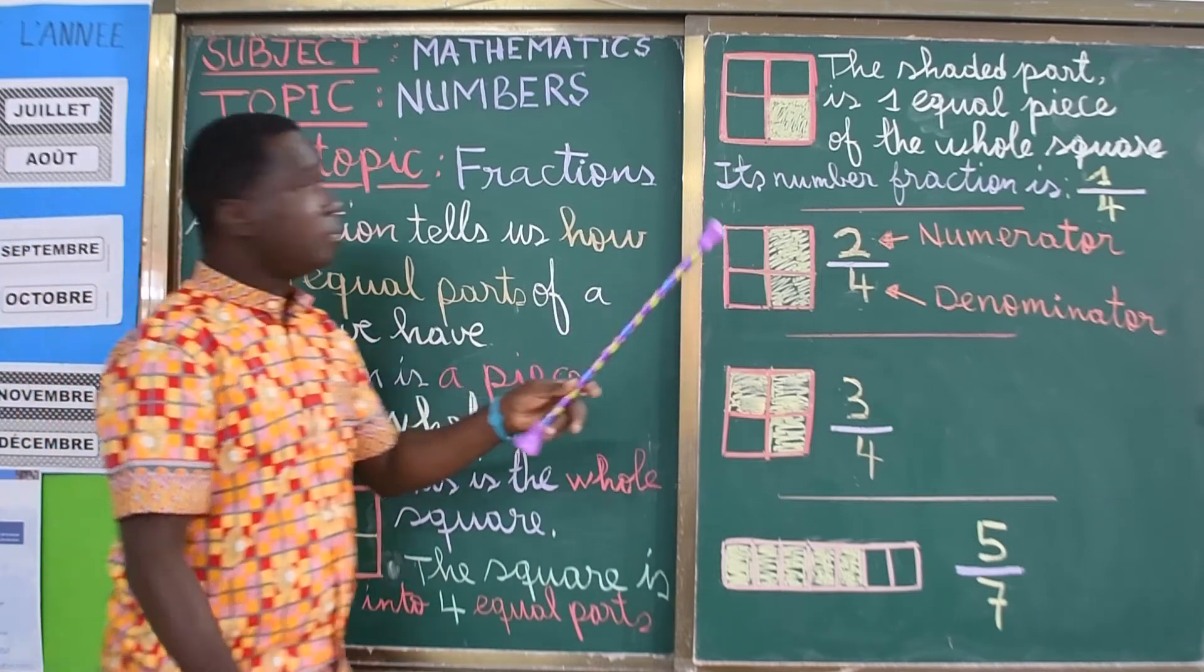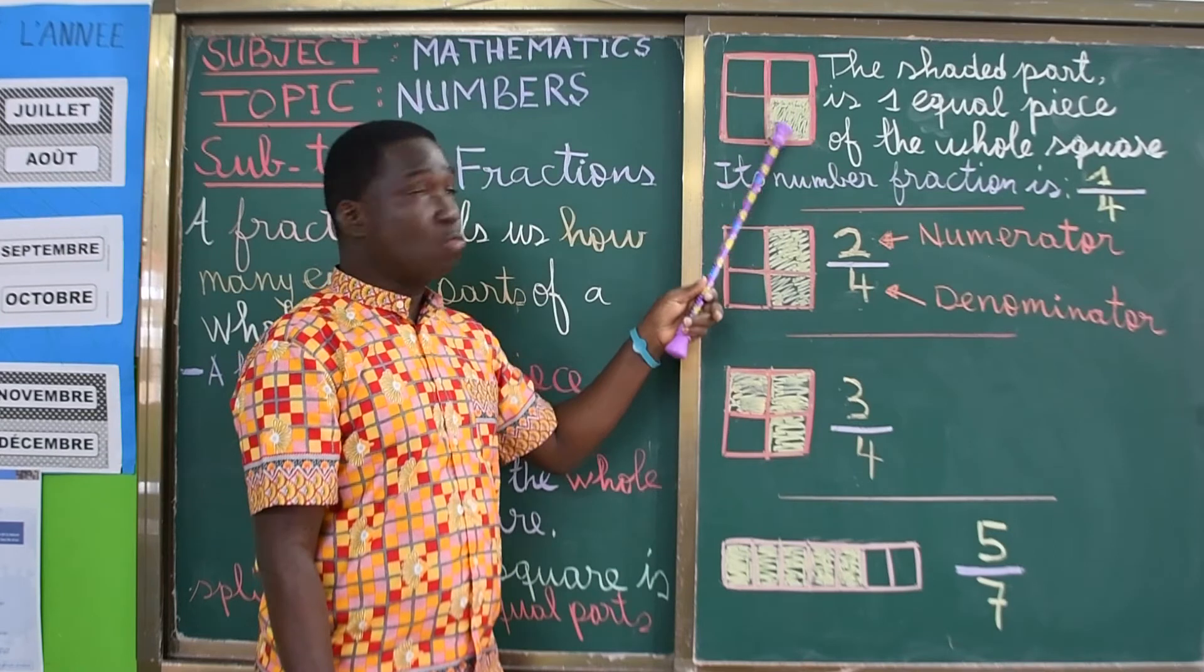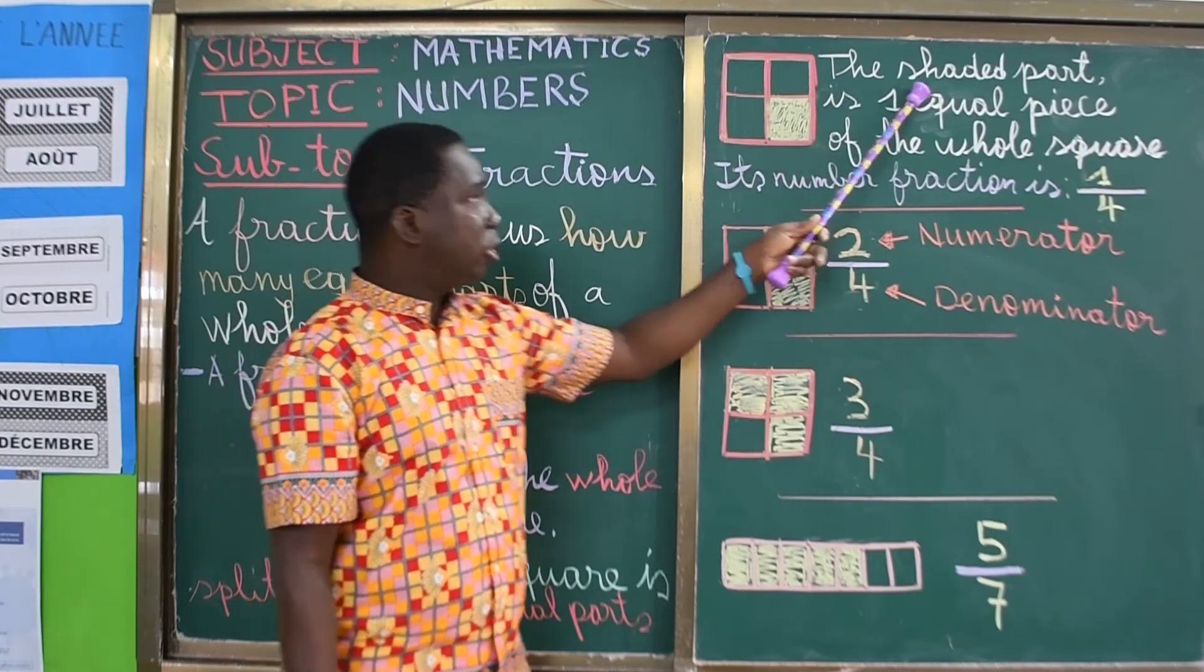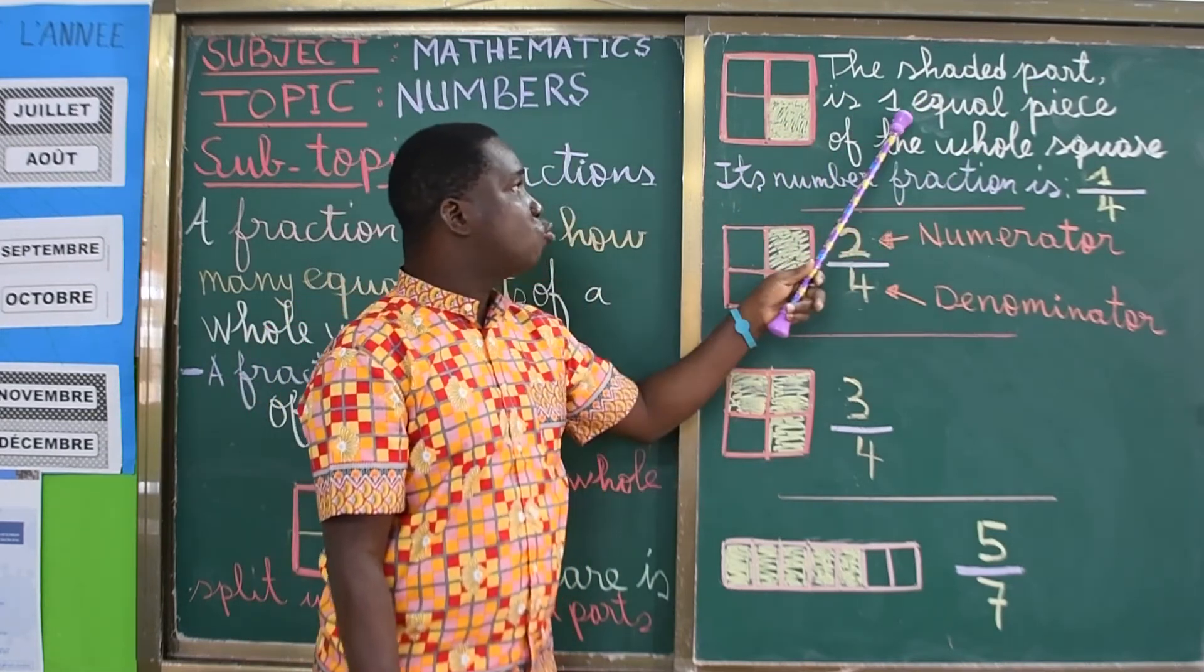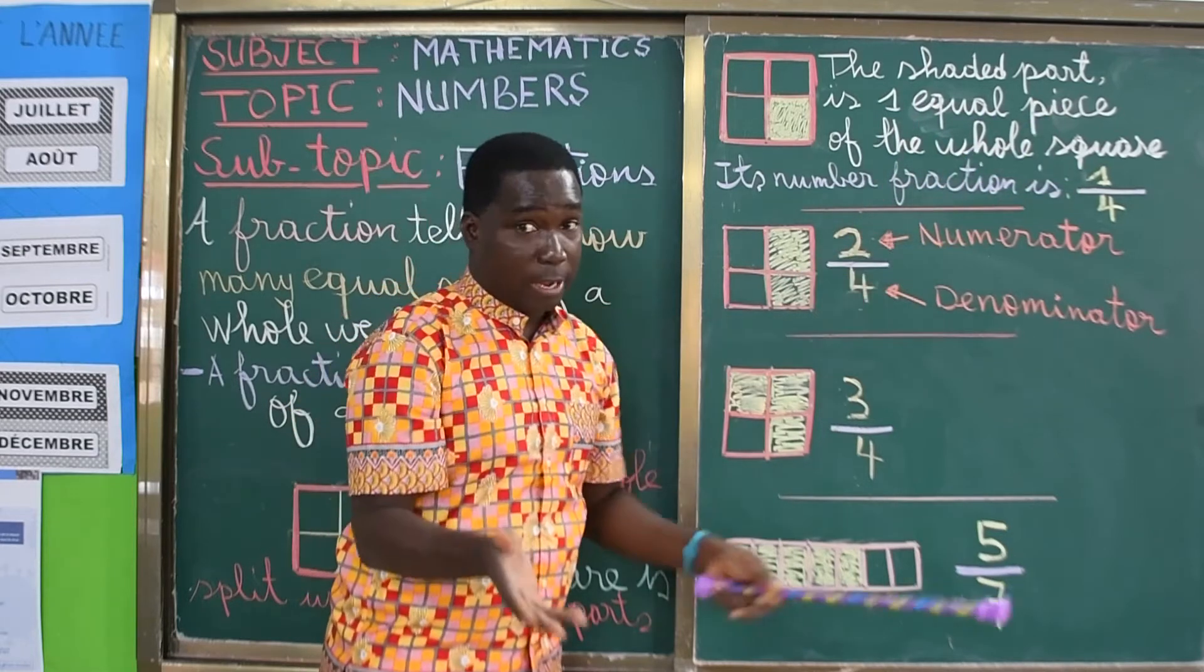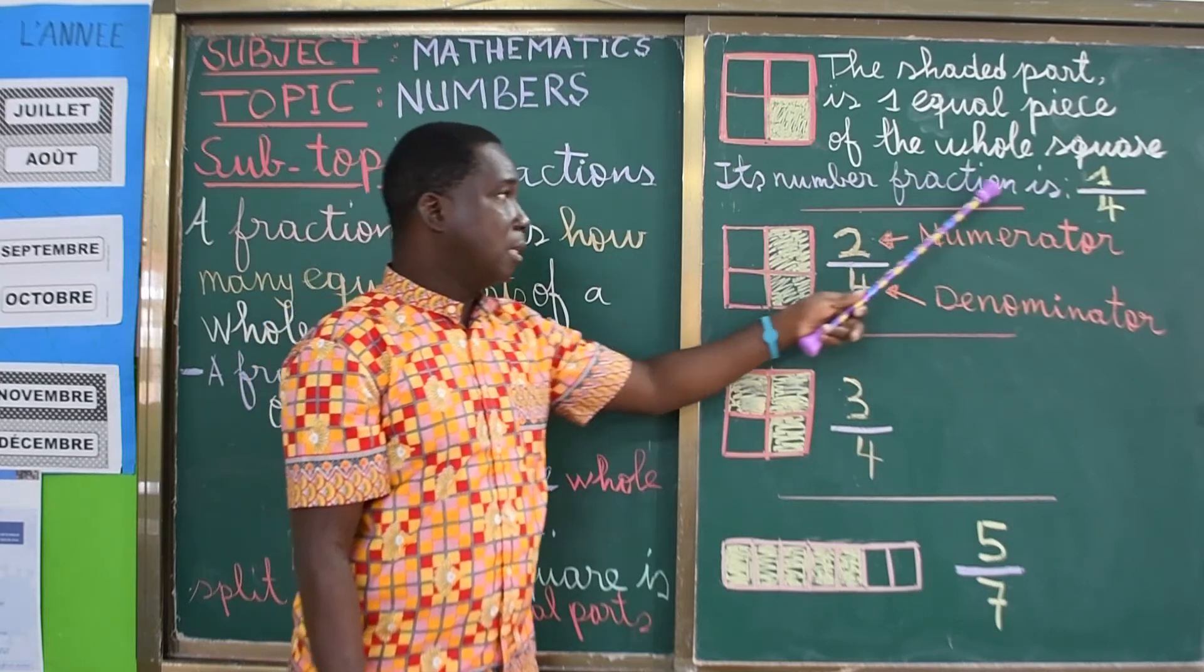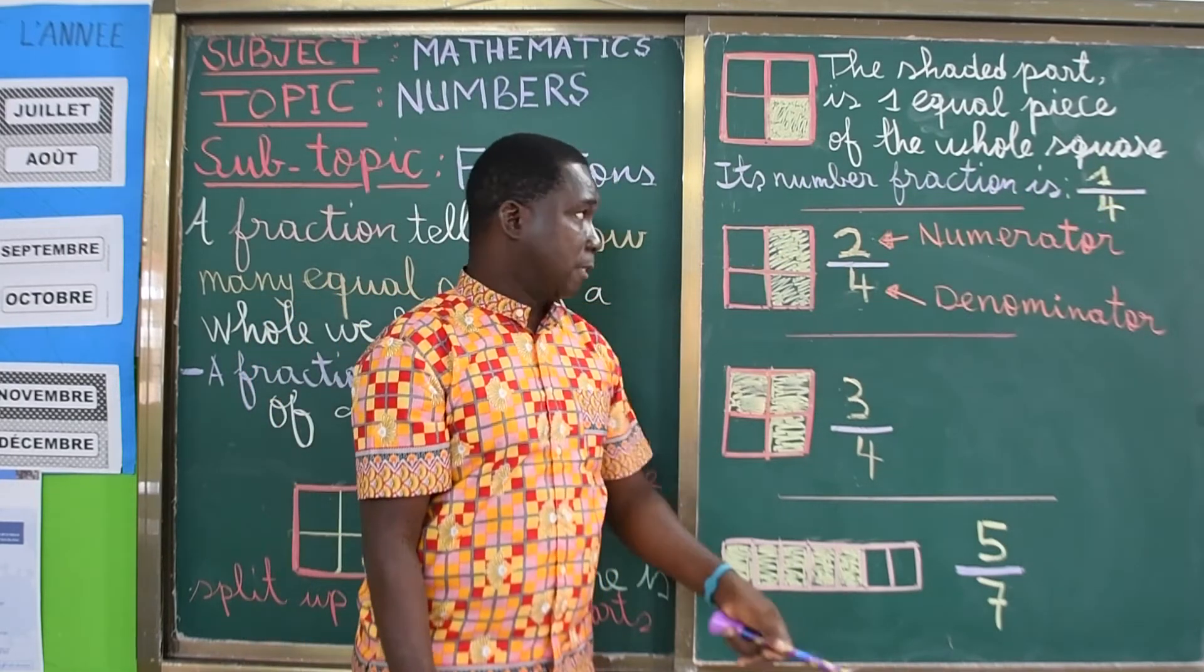And here, this is the same square here. We have shaded one part. So the shaded part, the bounded part, is one equal piece of a whole square. So its number fraction is one over four.